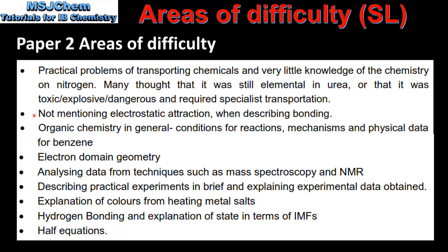Next we have not mentioning electrostatic attraction when describing bonding. All three types of bonding — ionic, covalent, and metallic — include electrostatic attraction. That's electrostatic attraction between oppositely charged ions (ionic bonding), electrostatic attraction between nuclei and shared pairs of bonding electrons (covalent bonding), and electrostatic attraction between a lattice of positive metal ions and delocalized electrons (metallic bonding).